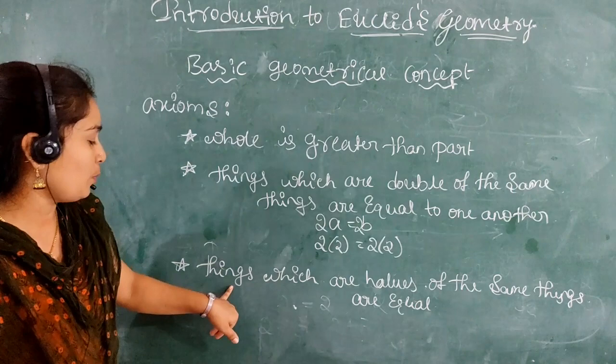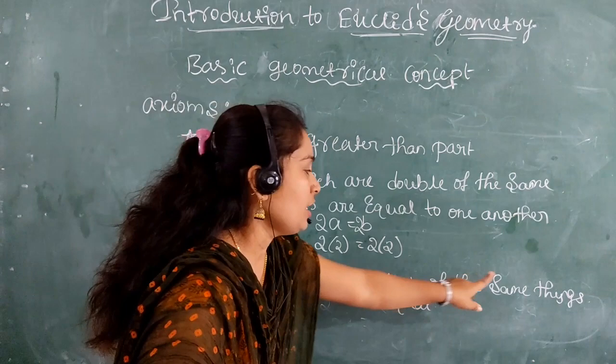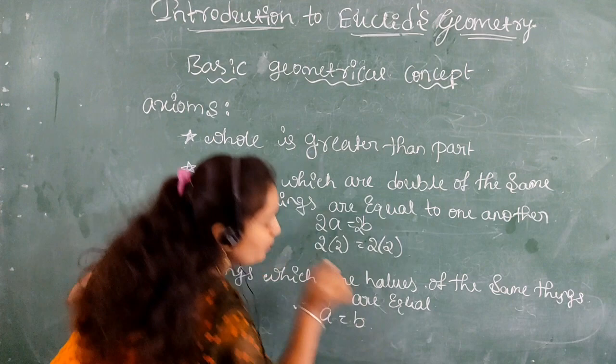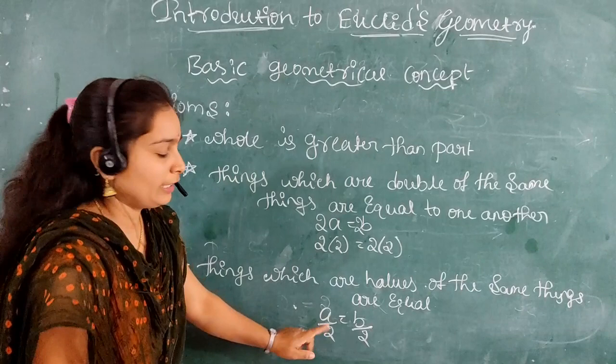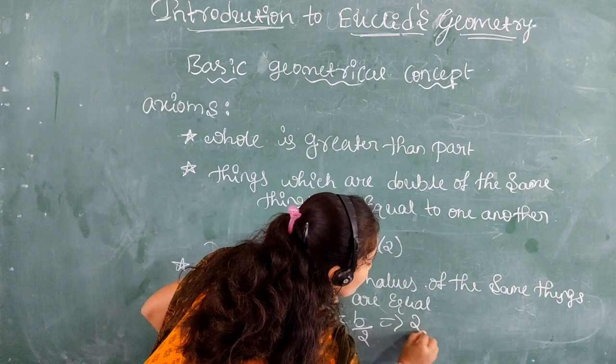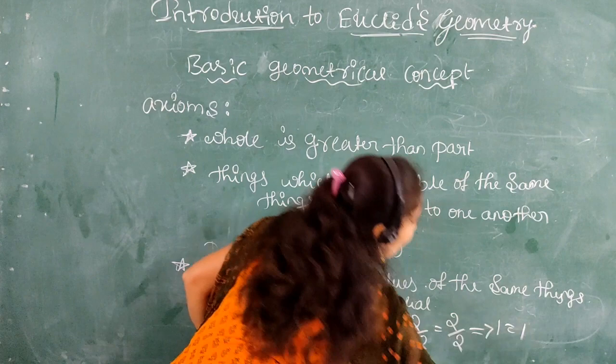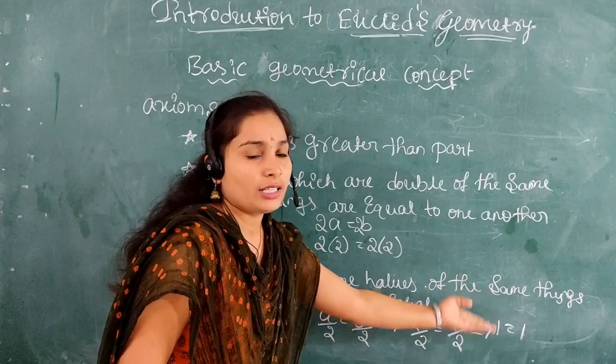The next axiom: things which are halves of the same things are equal. If A equals B, then A/2 equals B/2. For example, if A equals 2 then B is also 2, so 2/2 equals 2/2, which gives 1 equals 1. The result is also equal. These are Euclid's axioms.